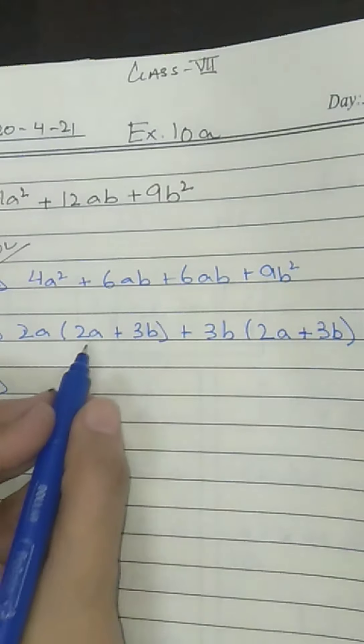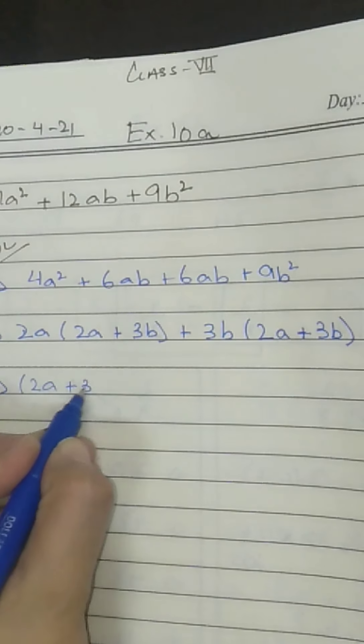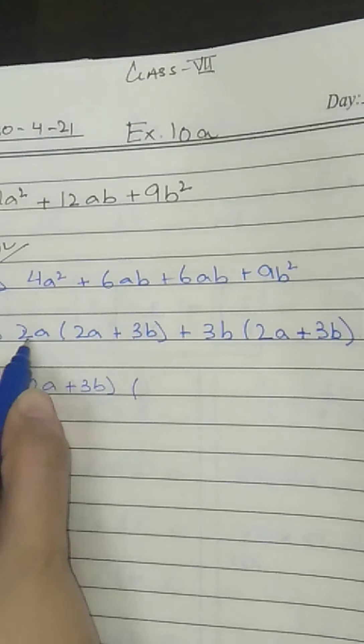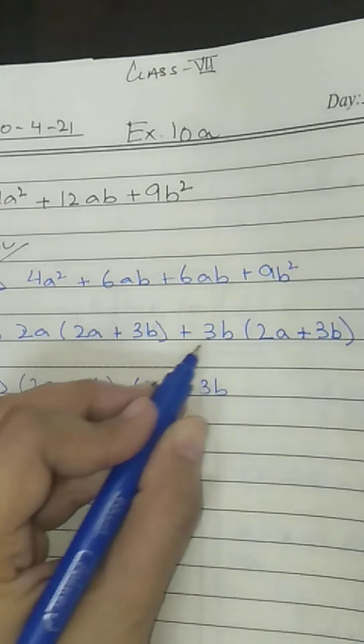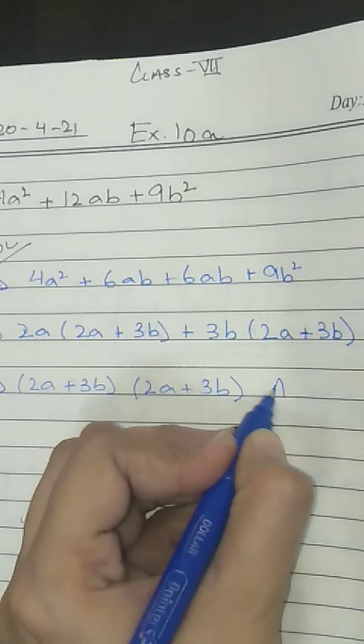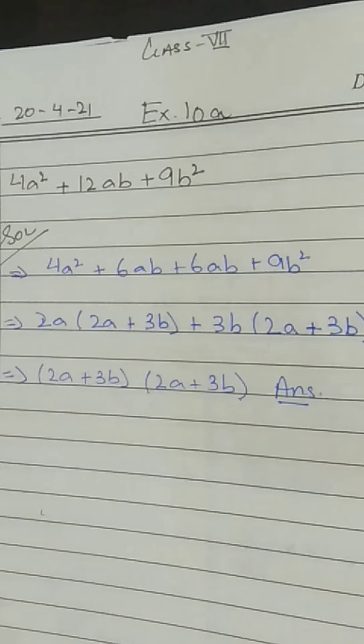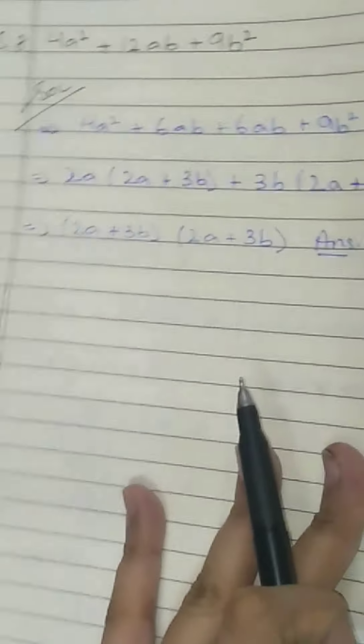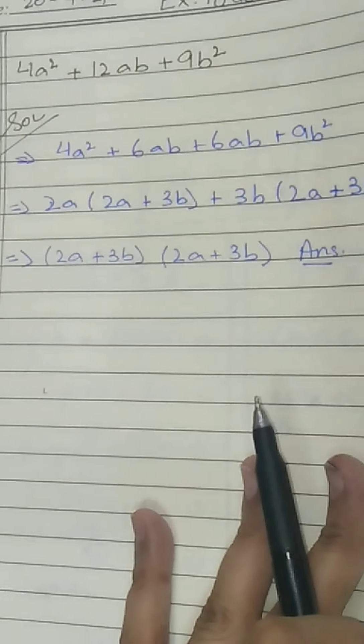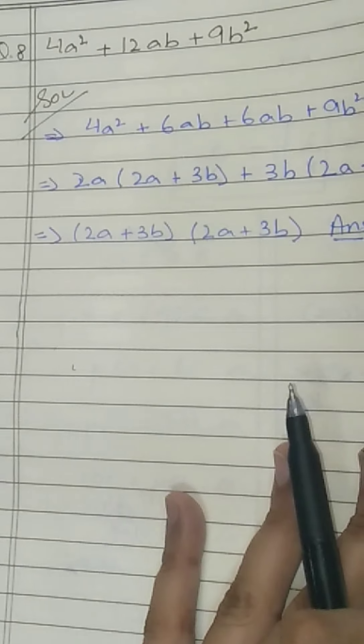See, 2A plus 3B, 2A plus 3B. Again, this bracket came in the common: 2A plus 3B. And next, what factor do we have? 2A plus 3B. This which was outside, we also bring it into one bracket.